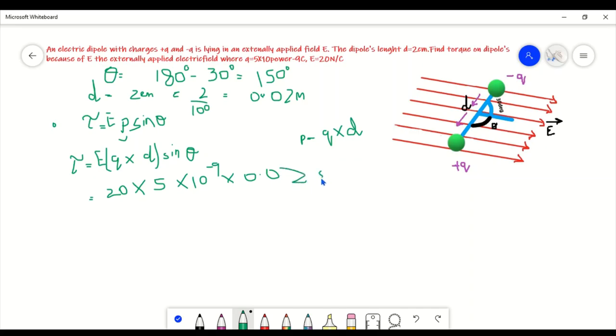We will be using sine 150, not 30. So we will get 1×10 raised to power -9... oh it will be positive 9, Newton meter per second.